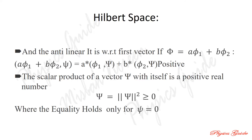If the combination is antilinear with respect to the first vector, then: if phi equals a·phi₁ plus b·phi₂, the relation becomes ⟨a·phi₁ + b·phi₂, psi⟩ = a*⟨phi₁, psi⟩ + b*⟨phi₂, psi⟩, where * denotes complex conjugate. This is always true.